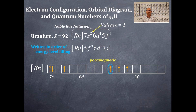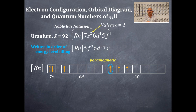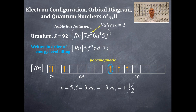The M sub L value is the orbital box in which it sits — the 3D orientation. The middle box is 0; to the right are 1, 2, 3; to the left of 0 are negative 1, negative 2, negative 3. This electron happens to be in the box negative 3, so M sub L is negative 3. If this is an upward-facing arrow, the M sub S value is positive one-half. There are the four quantum numbers for that circled electron.